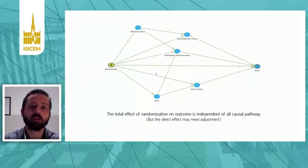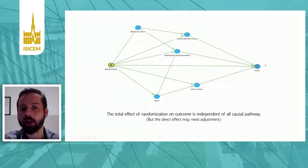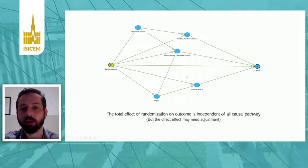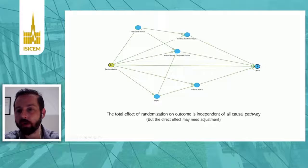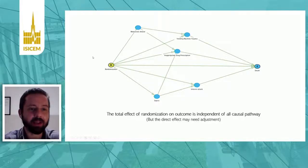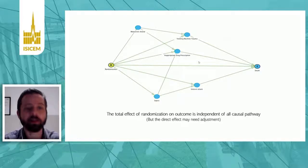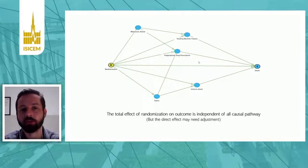Why do we do clinical trials? Once you randomize a patient aiming to look at an outcome, the total effect of a randomized intervention on that outcome — like death — doesn't need to be adjusted, regardless of what happens in the middle, whether you have sepsis, inappropriate drug prescriptions, or whatever. Once you randomize a patient, we are actually controlling for it. Of course, the direct effect may need adjustment, which is why we adjust primary endpoints with statistical analysis in some trials.